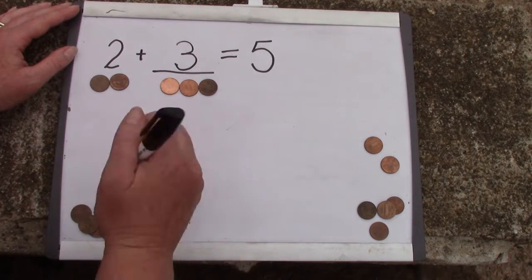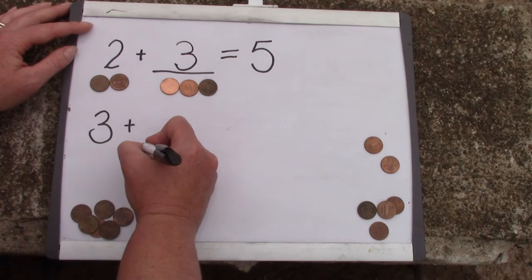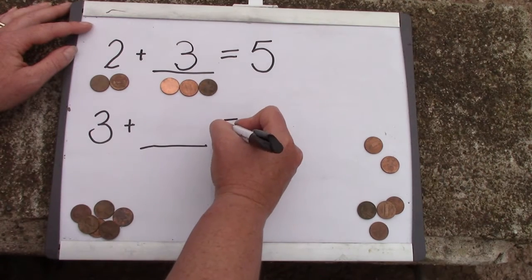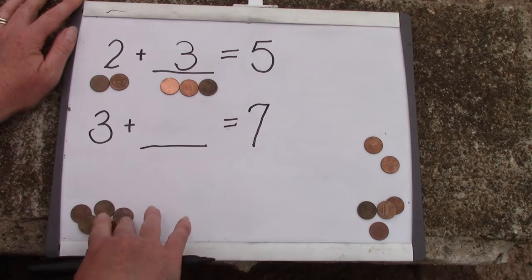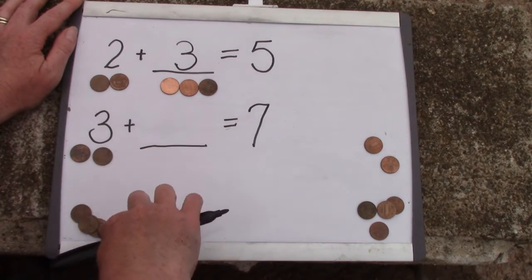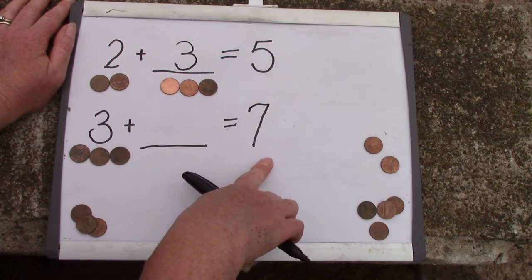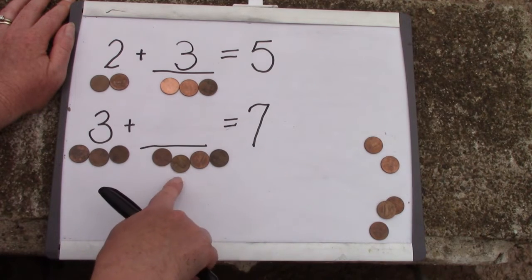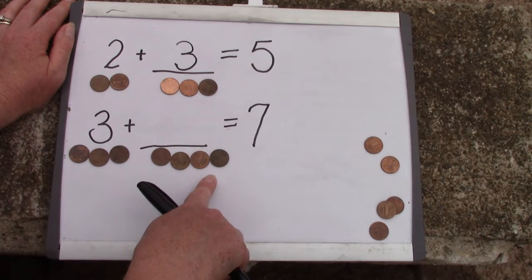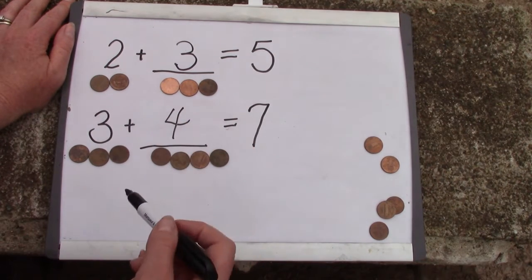Well let's try that again. Let's say I have three but I need seven pennies. I have one, two, three of them. But how many more am I going to need to make seven? Four, five, six, seven. How many more did I need? You're right. I needed four more pennies.